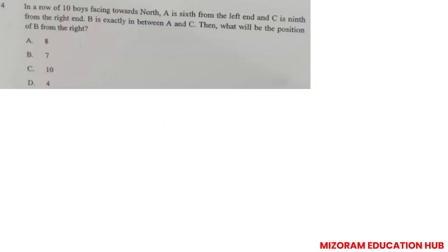Next question: In a row of 10 boys facing toward north, A is 6th from the left end. So 1st, 2nd, 3rd, 4th, 5th, 6th - this is A. Now C is 9th from the right end. 9th from the right end, so here C is standing or sitting.